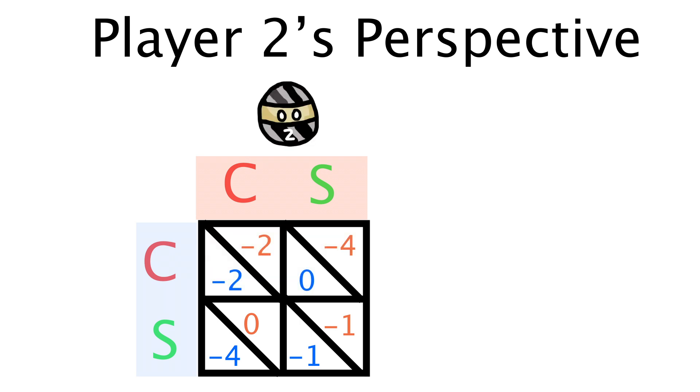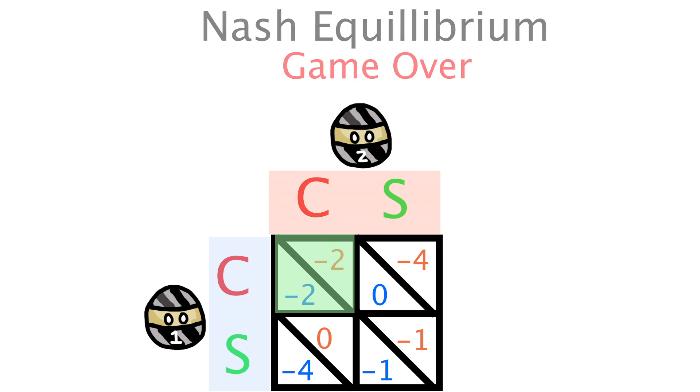And likewise, player two will also reach this conclusion and confess. The game has now reached its Nash equilibrium of confess-confess because neither player has any incentive to change their strategy. They've played their best move possible. This is a powerful example of game theory, as it shows how even though better strategies like cooperation exist, because the two players are acting in self-interest, they will betray each other.